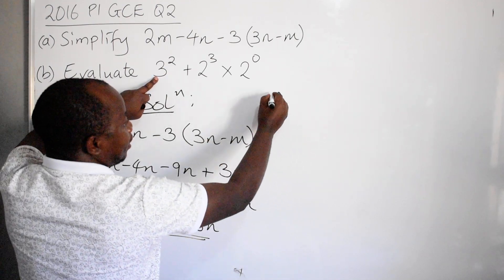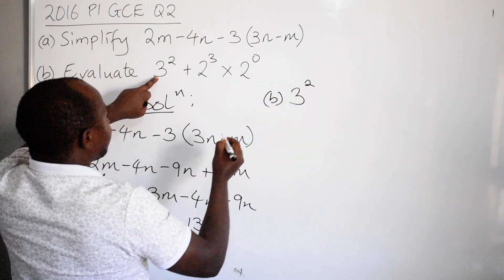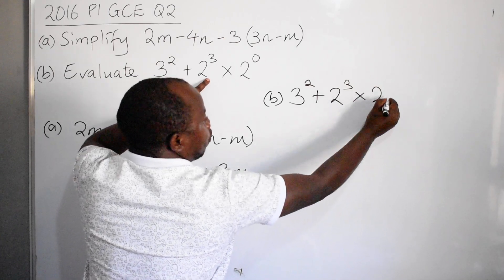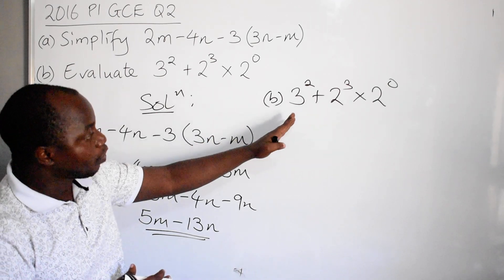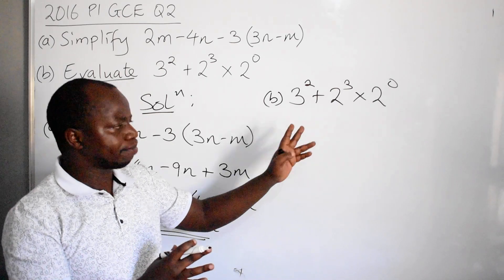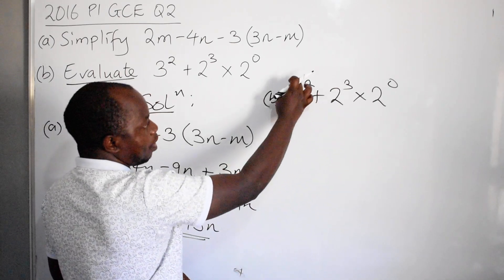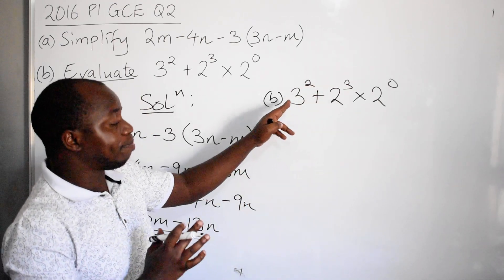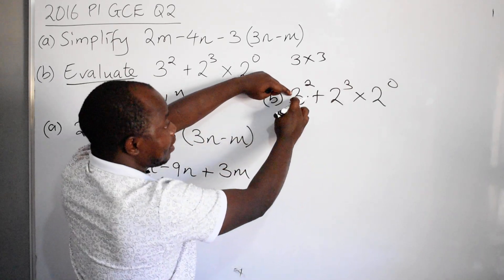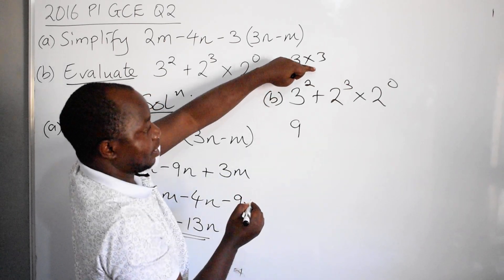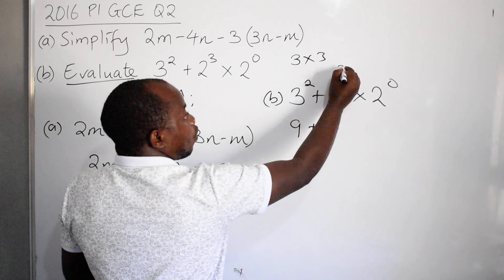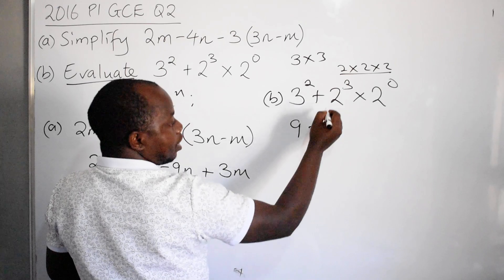Now let's look at Part B. We have to find the exact value of 3 raised to the power 2, plus 2 raised to the power 3, times 2 raised to the power 0. These are indices. First, 3 raised to the power 2 does not mean 3 times 2, but 3 times 3, which gives us 9. Then 2 raised to the power 3 does not mean 2 times 3, but 2 times 2 times 2, which gives us 8.